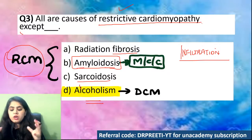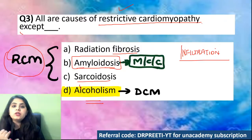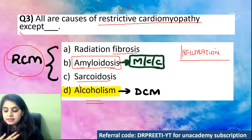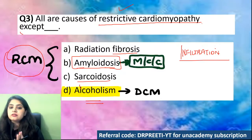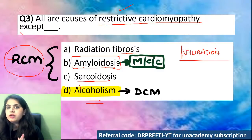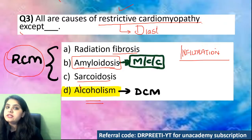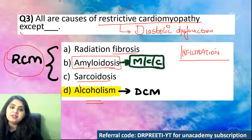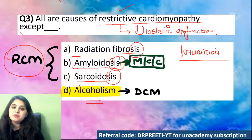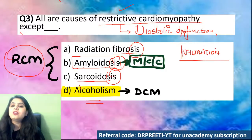In restrictive cardiomyopathy, what is getting restricted — systolic or diastolic function? It's a diastolic dysfunction that is going to happen. Fibrosis, amyloidosis, sarcoidosis — great mnemonic — all of these cause restrictive. Alcoholism causes dilated.